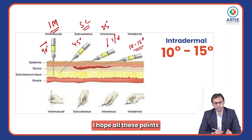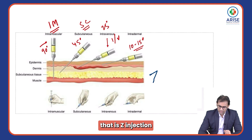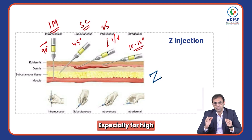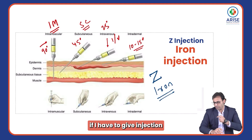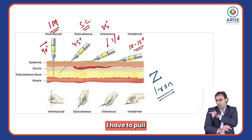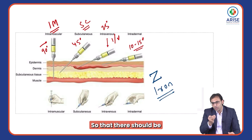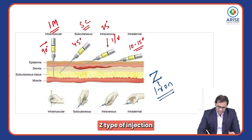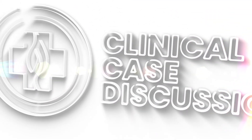The next type is the Z-track injection. We give Z-type injections especially for high molecular weight drugs like iron injections. The technique involves pulling the skin, giving the injection, then releasing, so that there is no leakage of the drug from the injection site. Remember: Z-type injection is especially used for iron molecule injections.